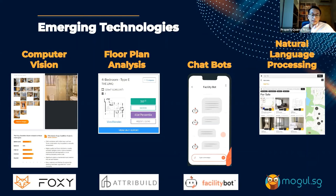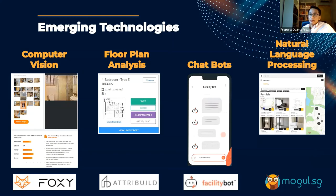We also want to highlight some recently emerging technologies for data science and real estate. One really interesting one is computer vision. Looking at the example from Foxy.ai — you can search online and find a demonstration to play with, uploading photos of properties — what they're able to do is use data science methods for computer vision to produce a score about property condition. This is really valuable because a lot of automated valuation methods currently do not take into account property condition, so this opens up that possibility and will increase the accuracy of valuation models at scale.